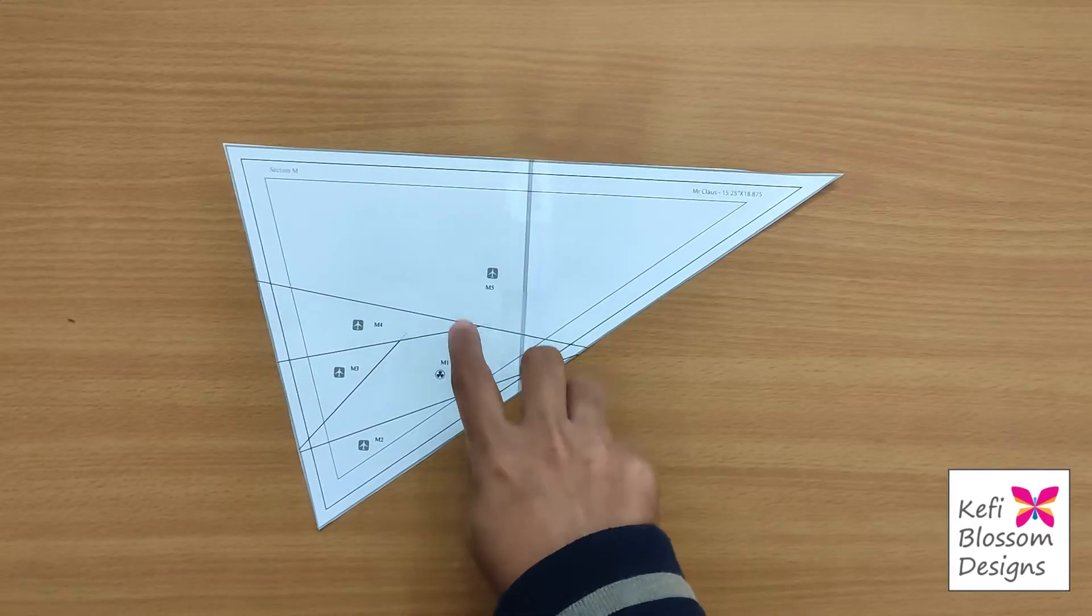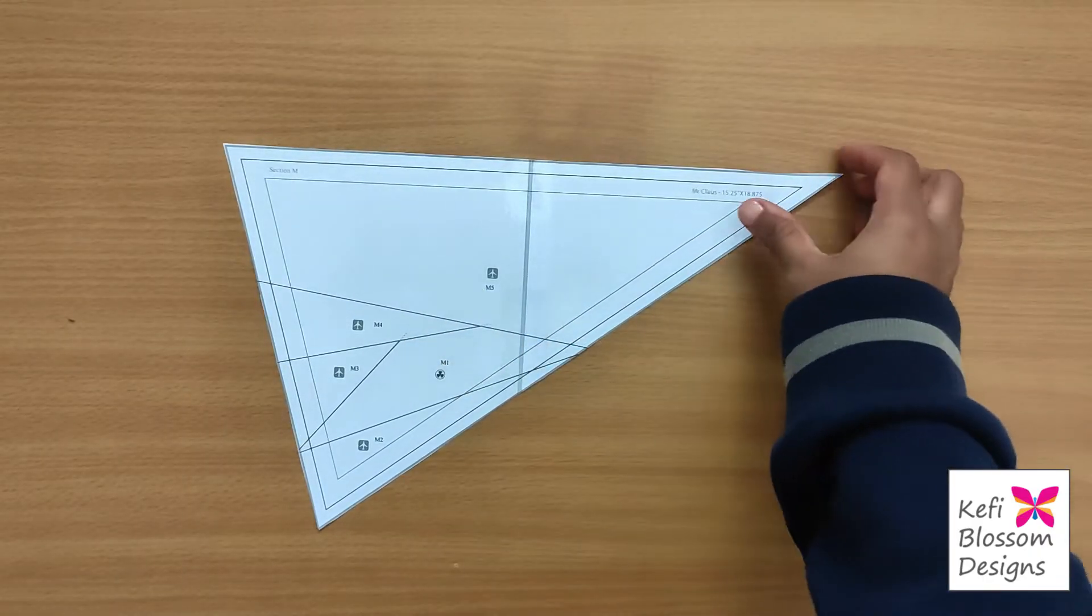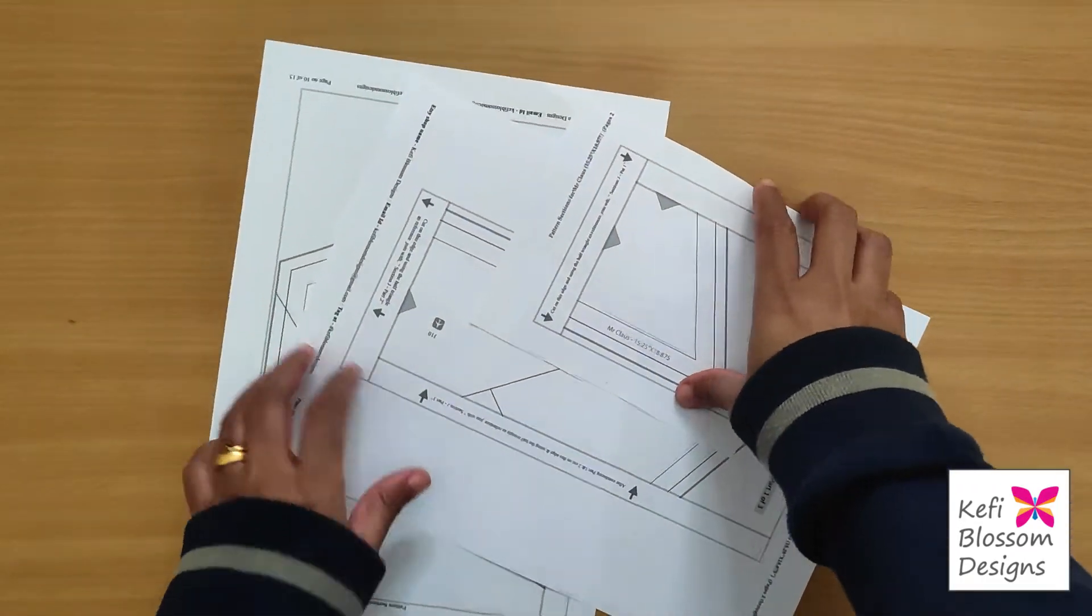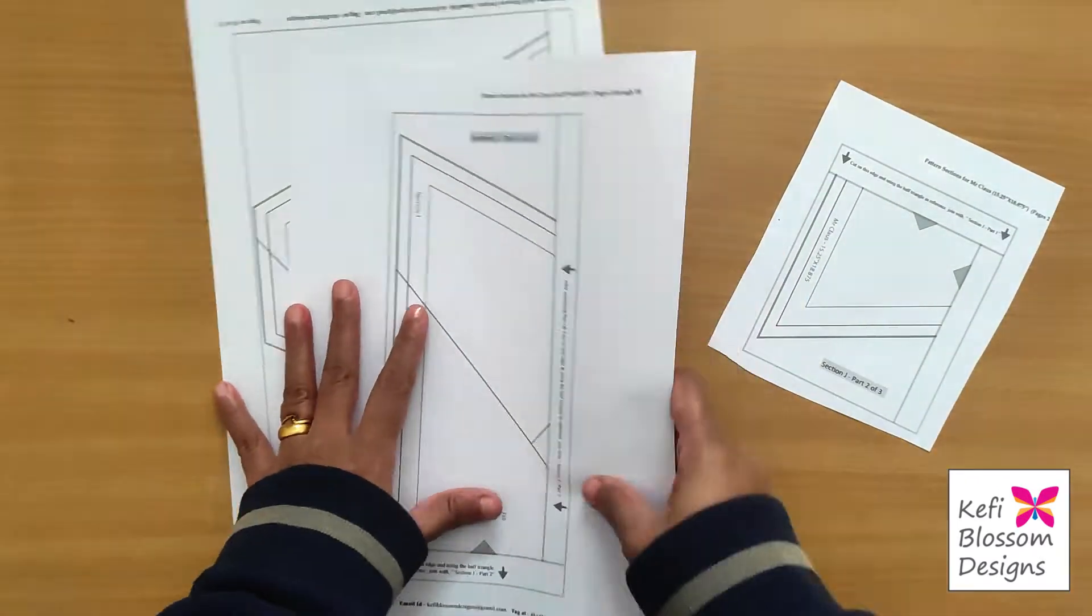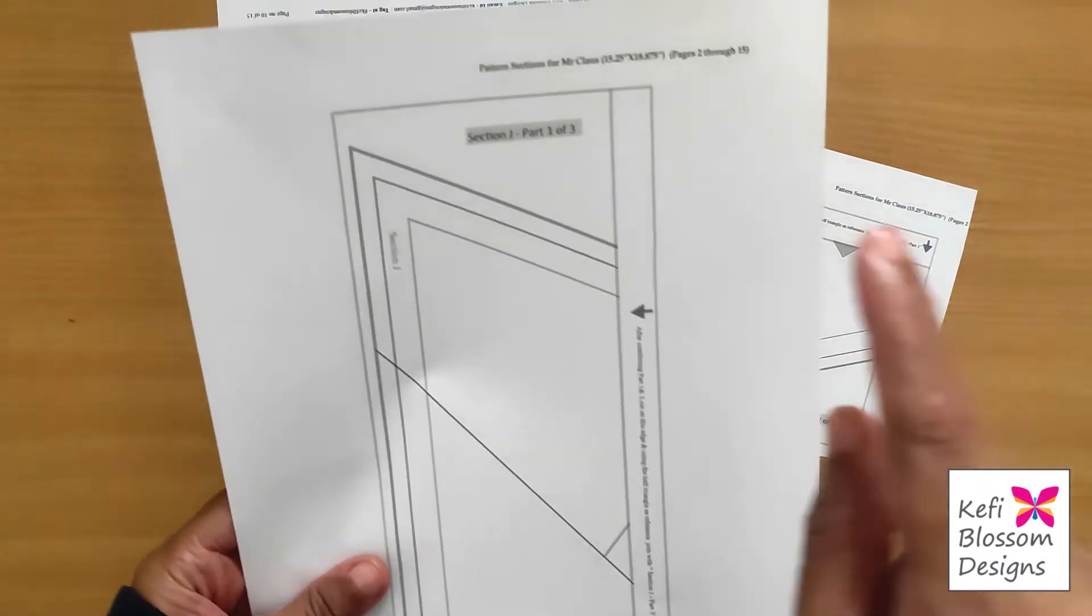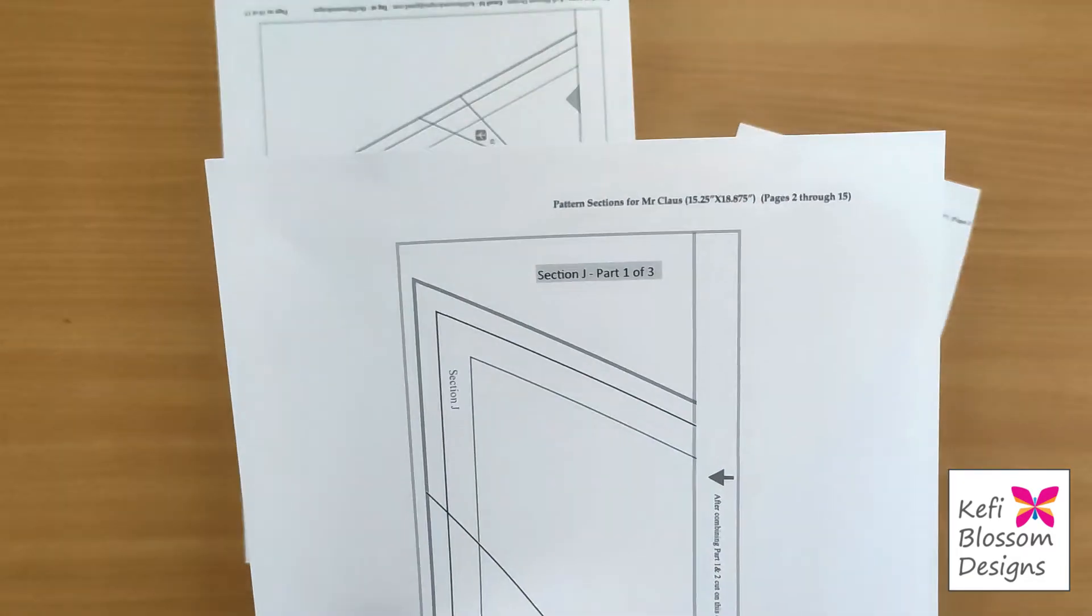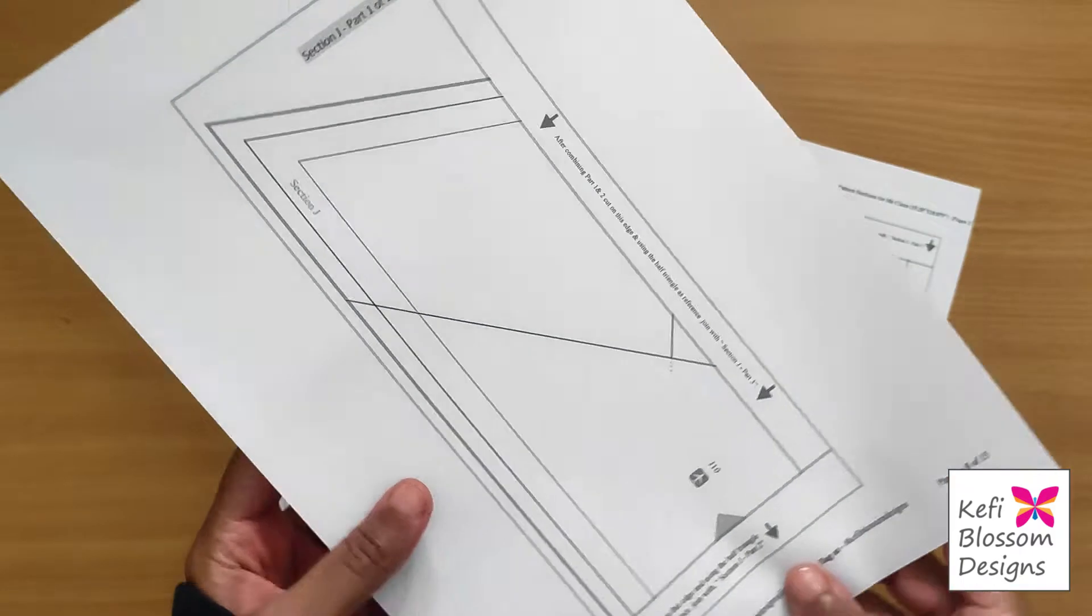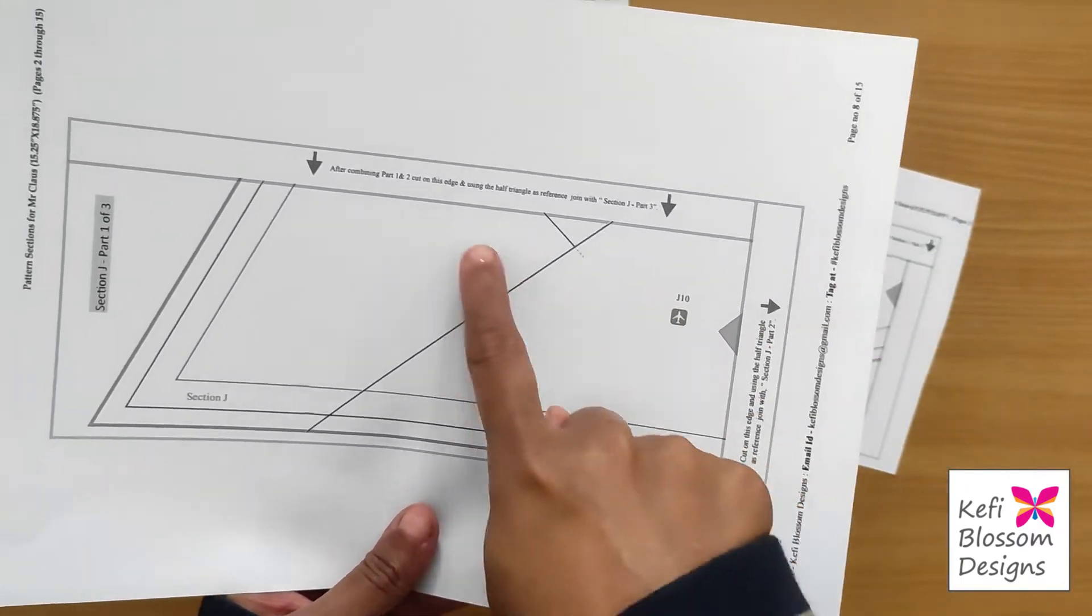Now this section was divided in two parts, but there are certain sections that are divided in three parts also. This is one such example. Again, the process to join these parts is the same. You need to check the label first. So here it says part one of three, which means there are three parts.